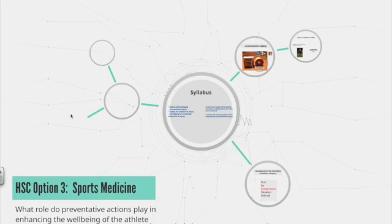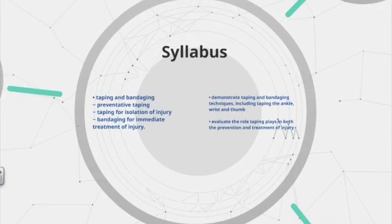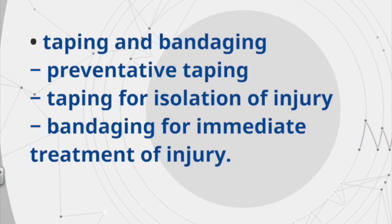This is HSC option three, Sports Medicine. The key idea is: what role do preventative actions play in enhancing the well-being of the athlete? The syllabus point we're focusing on in this video is taping and bandaging. This is probably one of the more obscure dot points in the syllabus, but we need to look at it in case there is an exam question in the HSC.